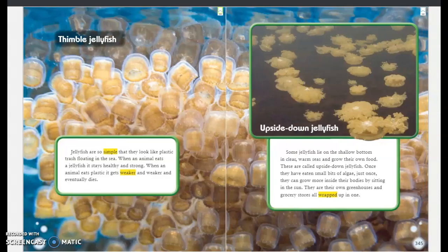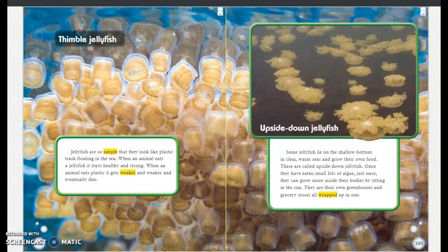Thimble jellyfish. Jellyfish are so simple that they look like plastic trash floating in the sea. When an animal eats a jellyfish, it stays healthy and strong. When an animal eats plastic, it gets weaker and weaker and eventually dies.